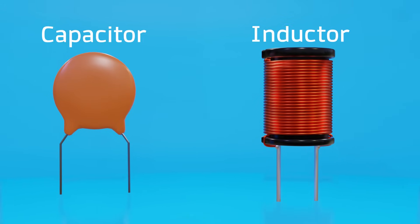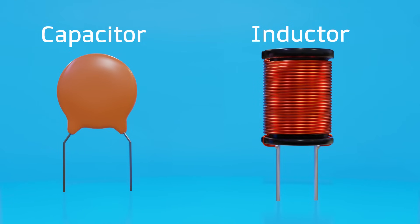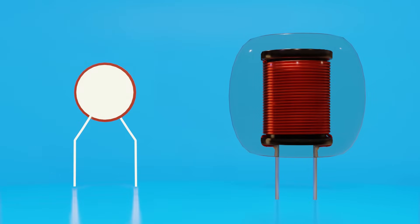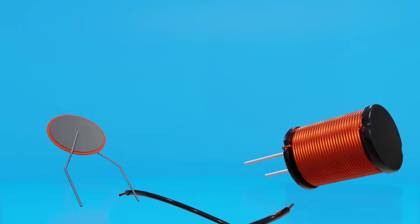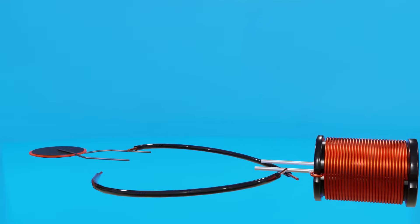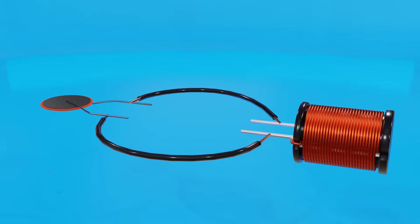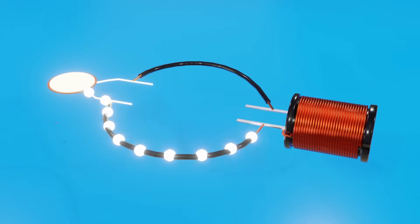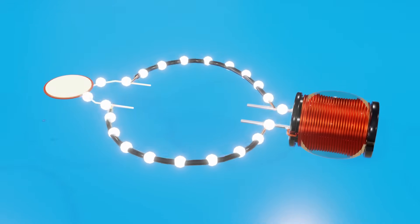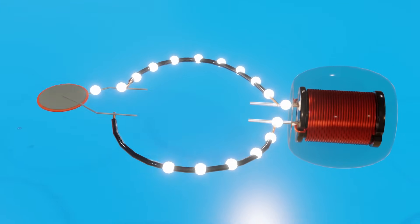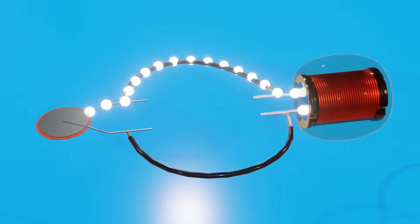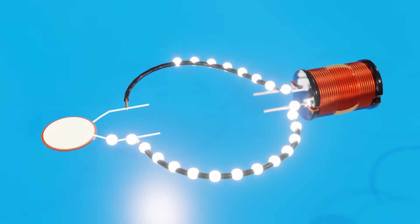A resonant circuit is made up of an inductor and a capacitor, which store energy — the capacitor with an electric field and the inductor with a magnetic field. In a closed circuit, in theory a current could flow cyclically indefinitely. When the capacitor discharges, current flows through the inductor forming a magnetic field. When the capacitor empties, the magnetic field collapses, inducing a current in the opposite direction and recharging the capacitor, starting the cycle again.